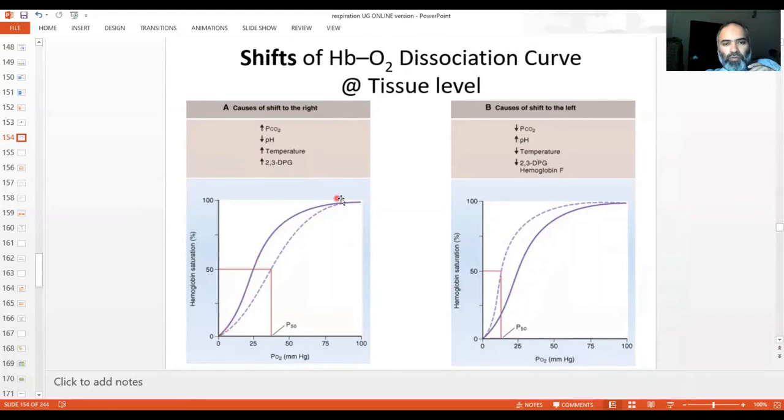This is the curve, the normal hemoglobin-oxygen dissociation curve. Now rightward shift would mean any shift of this curve towards the right, towards the curve's right.